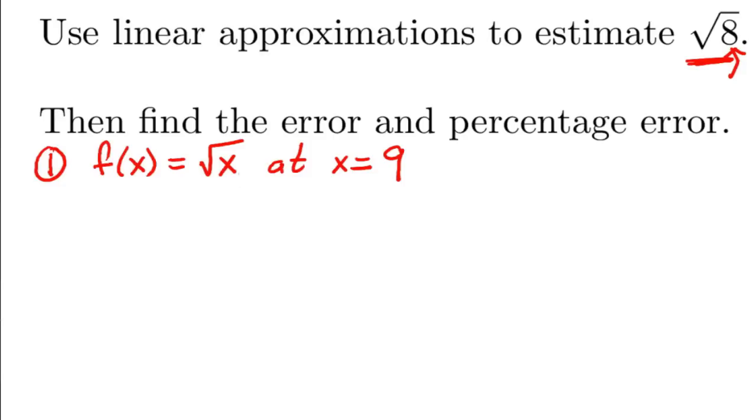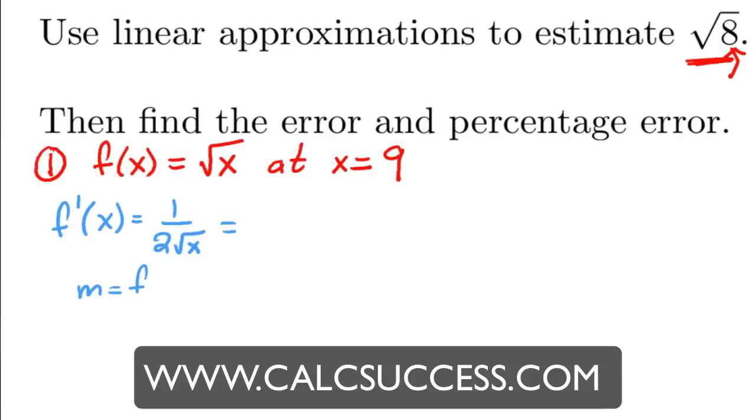And so we're going to find the tangent line of square root of x at x equals 9. Okay, so we've done this many times. We find the derivative, which is 1 over 2 square root of x. And so the slope is f prime at 9. Notice how you're using always your easy point, the one that you know.